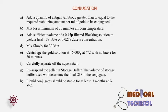Conjugation: Add a quantity of antigen or antibody greater than or equal to the required stabilizing amount per ml of gold to be conjugated. Mix for a minimum of 30 minutes at room temperature. Add sufficient volume of 0.45-micron filtered blocking buffer to yield a final 1% BSA or 0.02% casein concentration. Mix slowly for 30 minutes. Centrifuge the gold solution at 16,000 g at 4°C with no brake for 30 minutes, then carefully aspirate off the supernatant. Resuspend the pellet in storage buffer. Liquid conjugate should be stable for at least 3 months at 2 to 8°C.